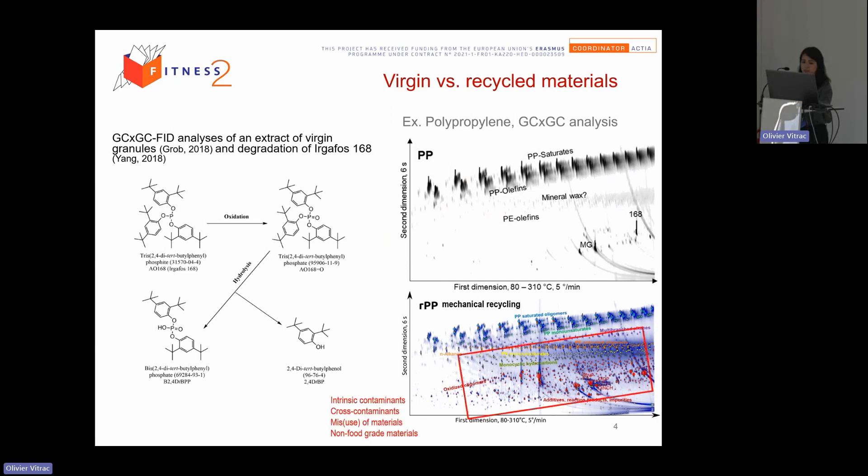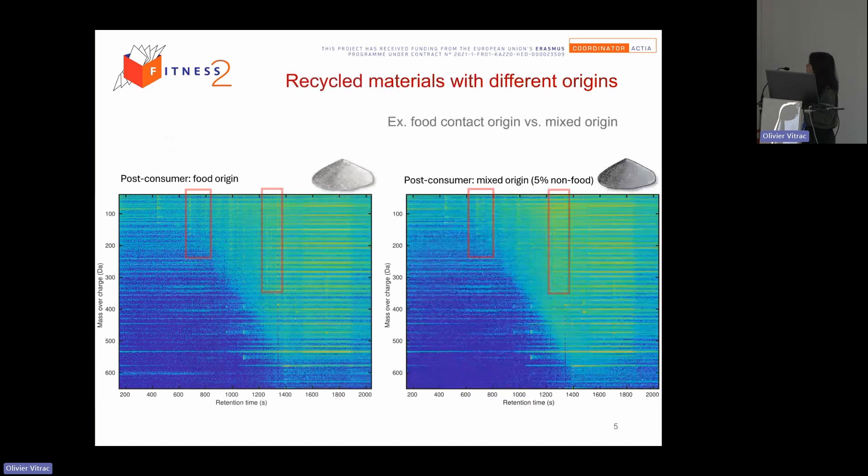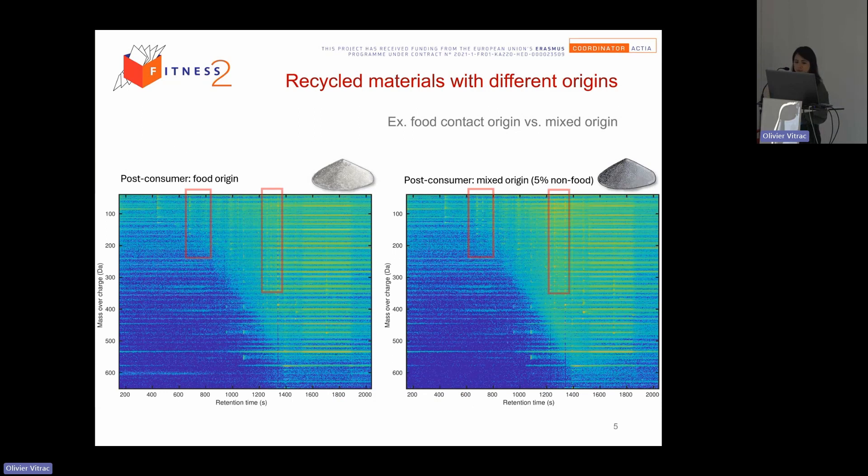But if we have two recycling materials, here is your chromatogram obtained by GC-MS, gas chromatography coupled with mass spectrometry. This one is the post-consumer of food origin, PET food origin. And here is a mixed origin. So the two PET are non-decontaminated, just washed. And as a first sign, I'm not sure that we can see any difference.